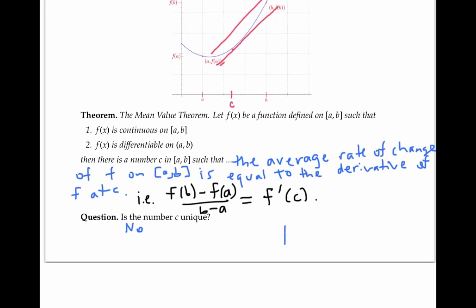So you might have drawn something maybe like this. Now if we draw our secant line, there are two values of C where the slope of the tangent line is equal to the slope of the secant line.